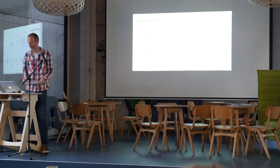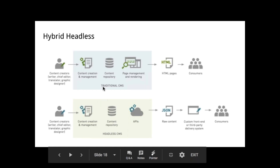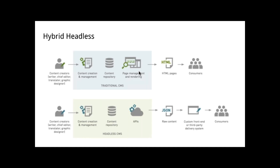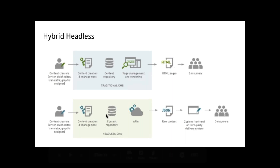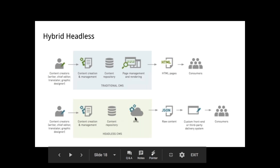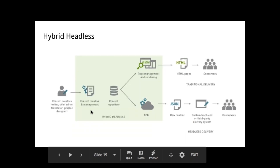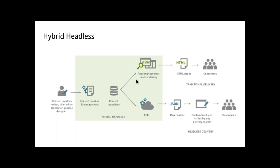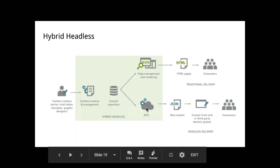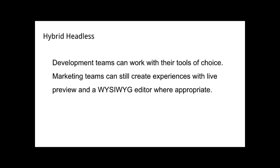Which leads us to hybrid headless — this is what Magnolia can do. Magnolia can work as a traditional CMS where you can still use the page editor and get previews, still work in a WYSIWYG context, and deliver HTML. And you can work in a headless fashion, delivering content via APIs. It's really just one product. Hybrid headless means one CMS that can deliver either as raw structured content via API, or lets you create experiences with a page editor and deliver HTML — empowering both development teams to work with their tools of choice and marketing teams to still create experiences with live WYSIWYG preview.